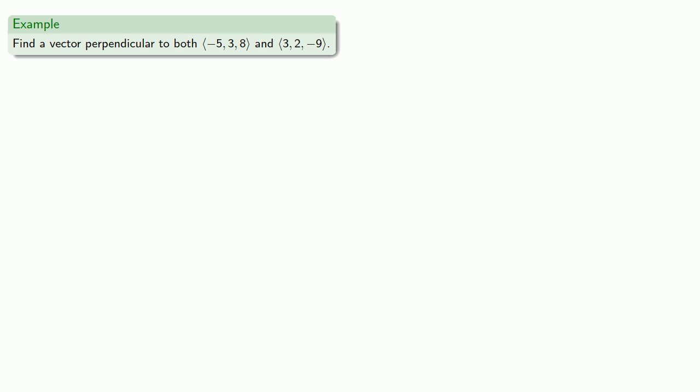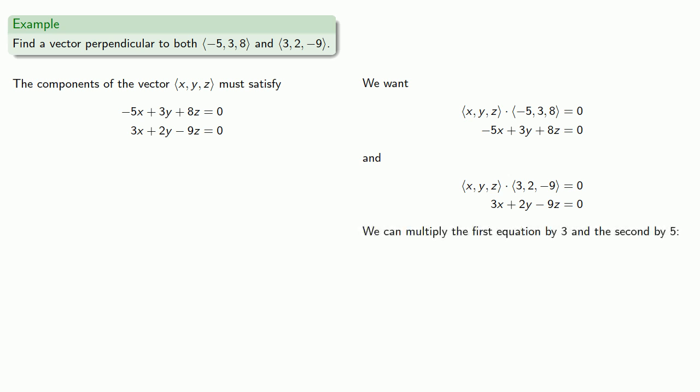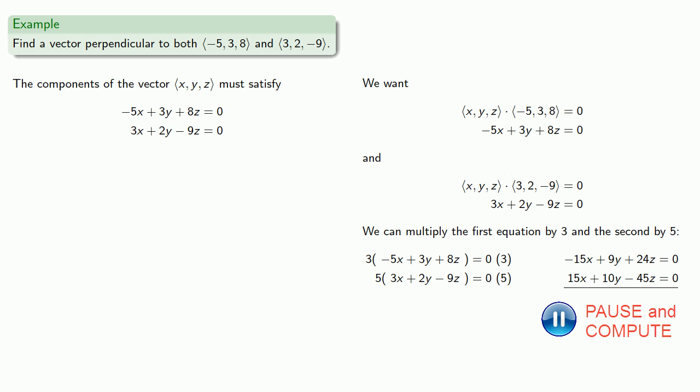Or let's find a vector perpendicular to both (-5, 3, 8) and (3, 2, -9). So again, we want the dot product of our vector (x, y, z) with the two vectors to be zero, and so this gives us the equations. We'd like to eliminate one variable from one equation, so let's get rid of the x and make our x-coefficient equal but opposite. And we could do that by multiplying the first equation by 3 and the second by 5. And if we add the two equations... And again, since this new equation combines the first and second equation, we can get rid of one of those first two equations. So let's get rid of the second one.